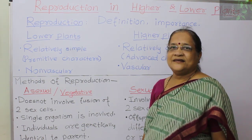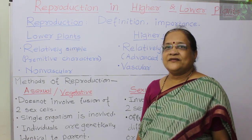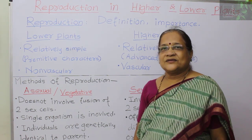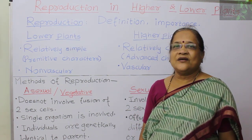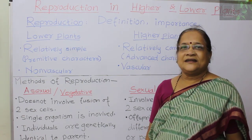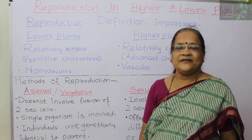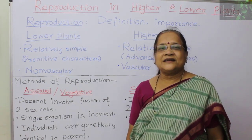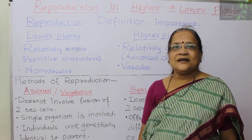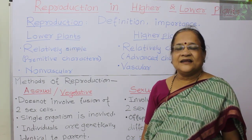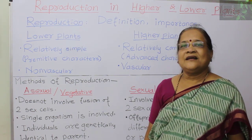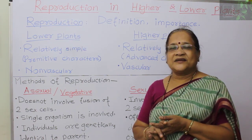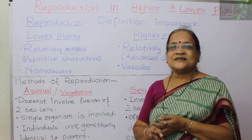First, we will see the definition of reproduction and its importance. The definition is: production of young ones like parents — that is what we call reproduction. The importance of reproduction is, first, the continuity of life and continuation of the species, which we call perpetuation and multiplication.